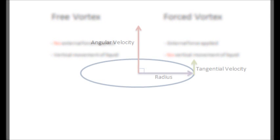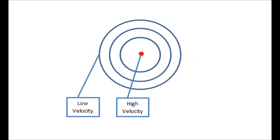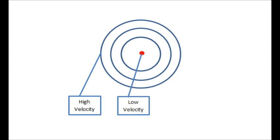One characteristic of both vortices is tangential velocity. For a free vortex, the tangential velocity increases towards the center because the fluid is approaching the exit point. Whereas for a forced vortex, the velocity decreases towards the center because the force is applied across the entire radius. So, the angular velocity is constant.